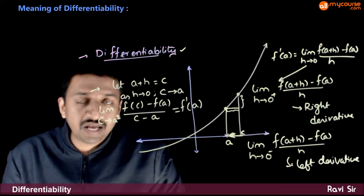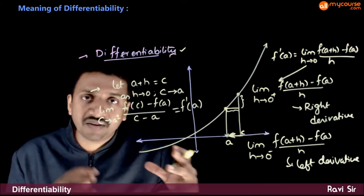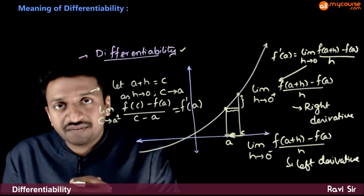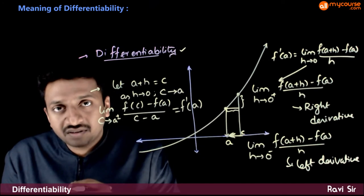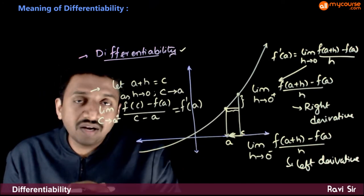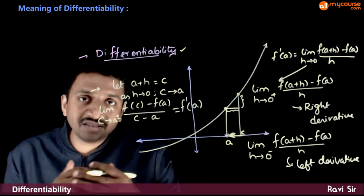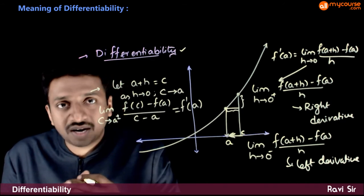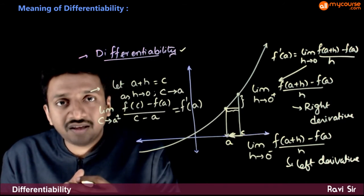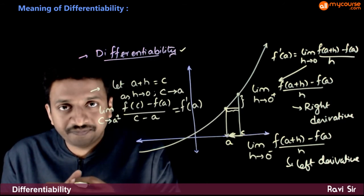Now we have understood what the right derivative is and what the left derivative is. Only if both exist and both are equal, then we say that f of x is differentiable at a point x equal to a.